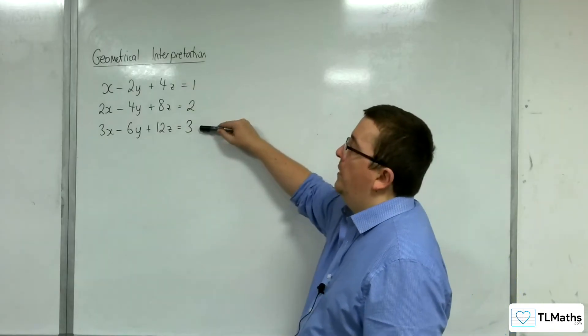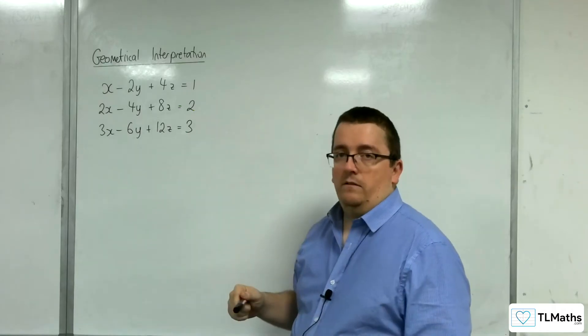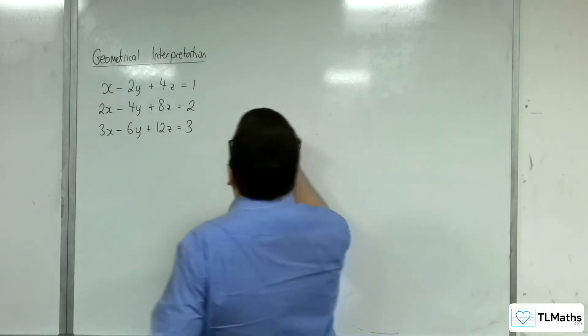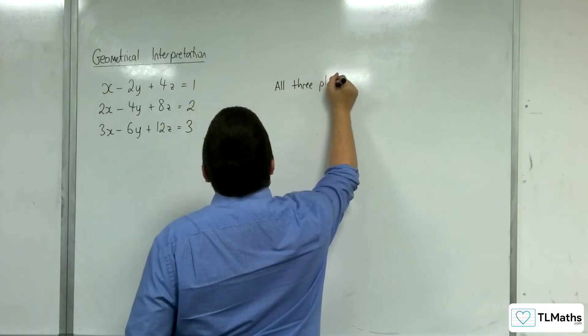If you divide the third one through by three, you actually get the first one again. So, actually, all three planes are identical.